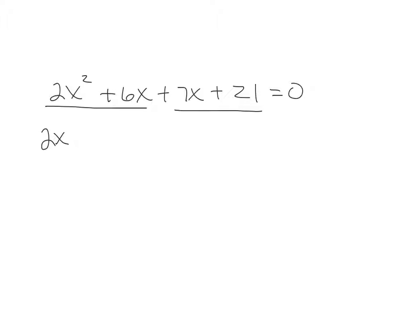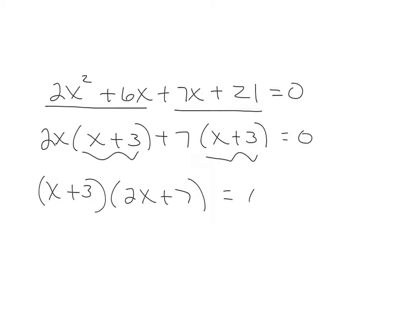is where you group two individual pieces and you pull out the common terms. So in this first group, we would have 2x as a common term. The next group, we would have 7 left as a common term. The common term here is x plus 3, and we have 2x plus 7 left. And then again, we set each little product, each factor equal to 0, and we get x by itself.